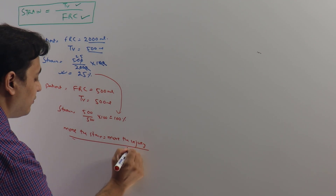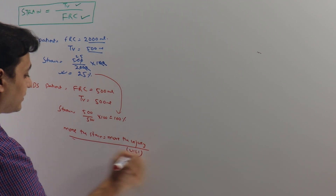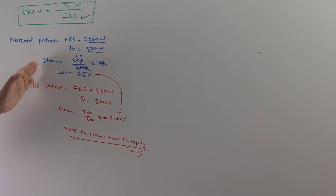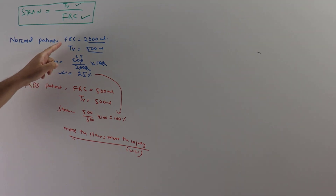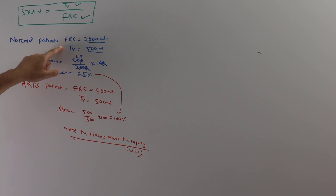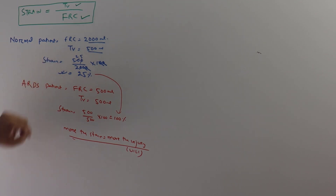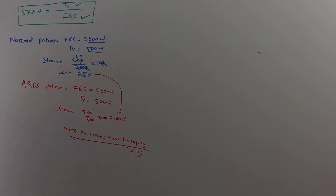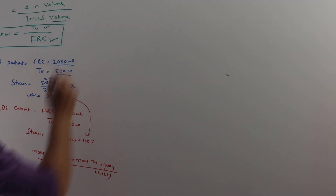Now, how do we measure strain at the bedside? The FRC is the volume that remains inside the lung after normal exhalation, which is difficult to measure directly. So how can we measure strain at the bedside?